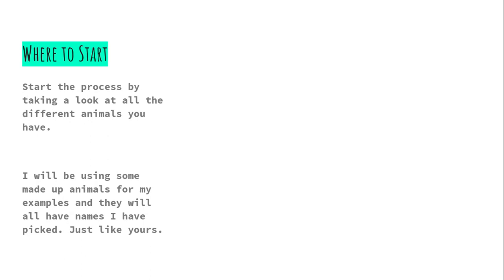So we're going to start with where to physically actually start. You and your group are going to start by looking at all the different animals that you have created. Remember, you have a food web on your page and we are going to make a dichotomous key of all the animals. I'm going to do this process using some made-up animals as examples. Yes, there are a lot less than you have, but the process is still the same.